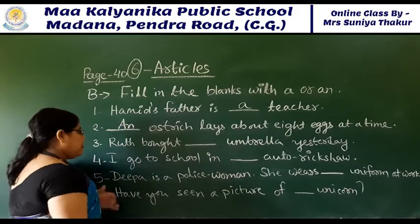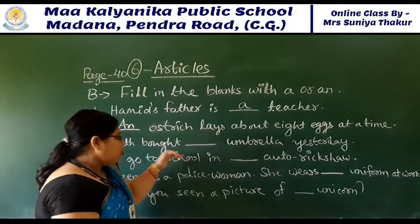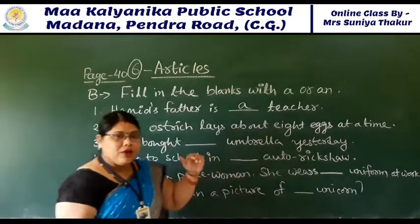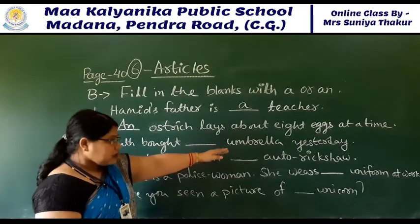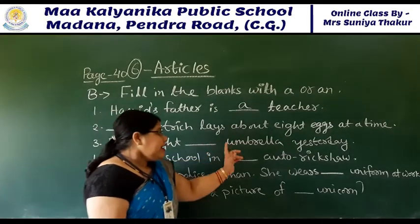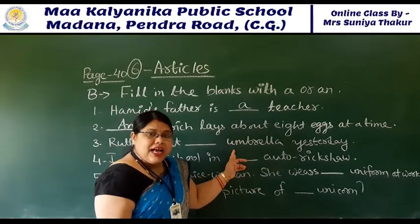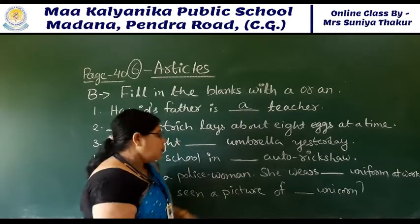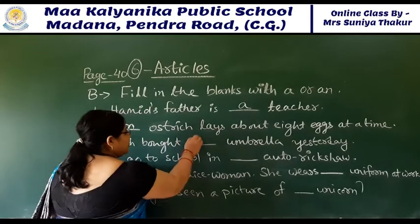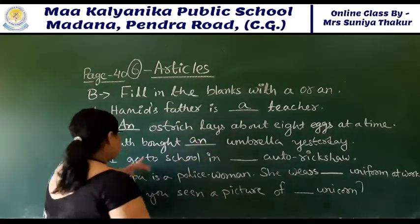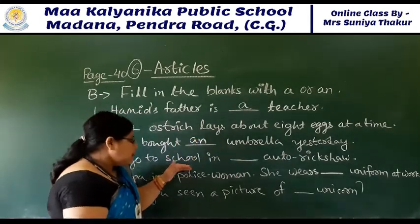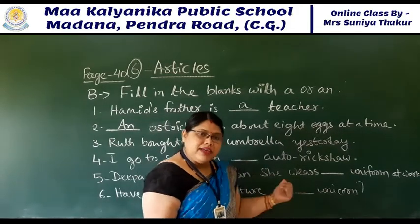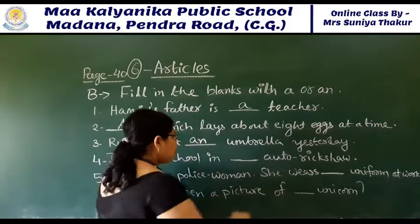Ruth bought an umbrella yesterday. Look at this - 'umbrella'. The vowel sound is coming, and that is a vowel sound. So what will come? AN - an umbrella. I go to school - same thing, AN.